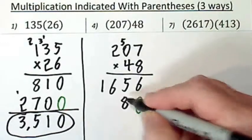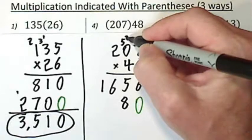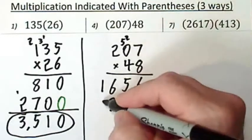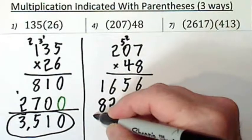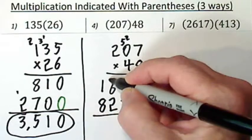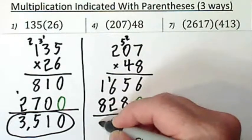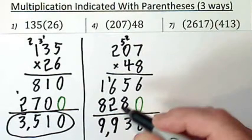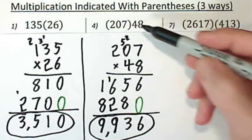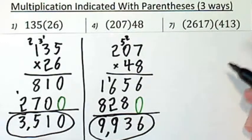Four times seven, twenty-eight. Carry the two. Four times zero is zero, plus two is two. Four times two is eight. Now add all this up. So the product or the answer is nine thousand nine hundred thirty-six.